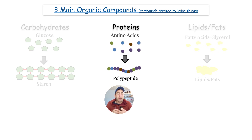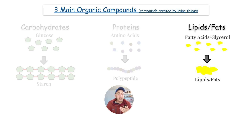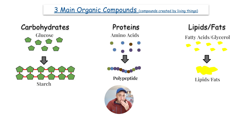Proteins are made up of amino acids. There are really 22 different types, which we'll get into more in depth later on. Amino acids make a long string called a polypeptide, and that is a protein. Lipids/fats are the third category, and they are made up of fatty acids and glycerol. So those are the three main organic compounds: carbohydrates, proteins, and lipids/fats.